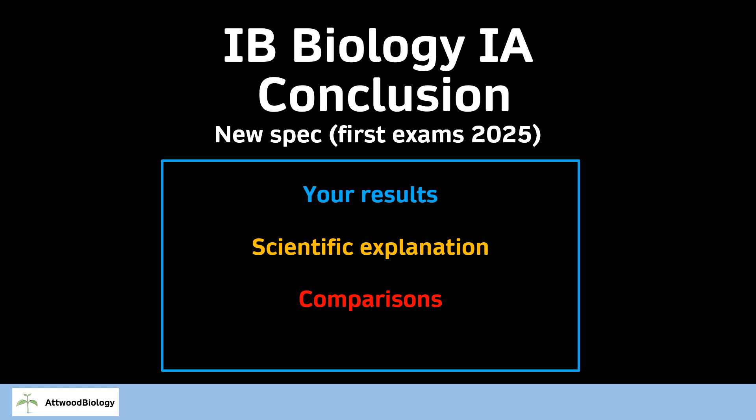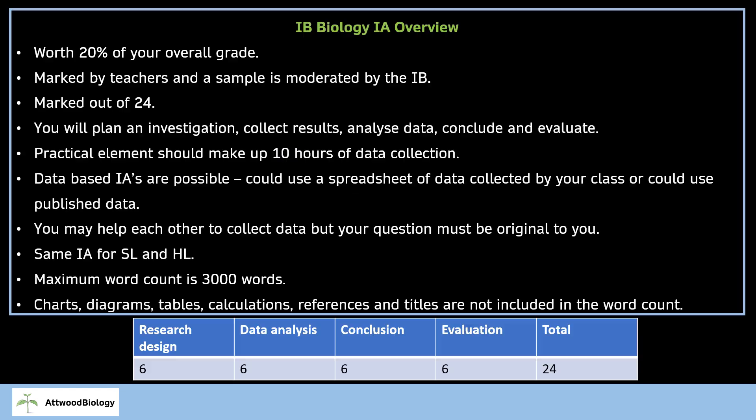Hello and welcome to the IB Biology IA conclusion overview. We're going to go through what needs to be included in your conclusion in order to get six marks in this section. Here's just the overview of the IA. You can see that the conclusion is worth six marks out of 24, so 25% of the whole IA.